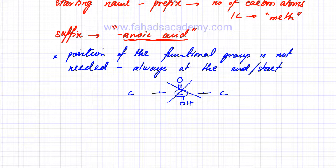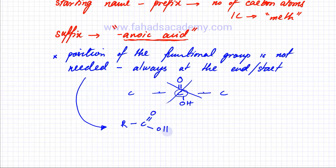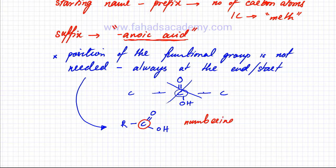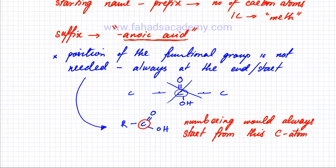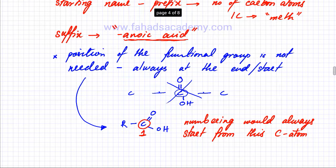Another thing to remember: whatever the molecule, the numbering — if needed — always starts from the carbon atom that is part of the carboxylic acid functional group. This carbon atom is always numbered one. So you always number your chain from this side. Unlike previous cases where you chose the side giving the smaller number, here you always start from the side where the carboxylic acid functional group is attached.